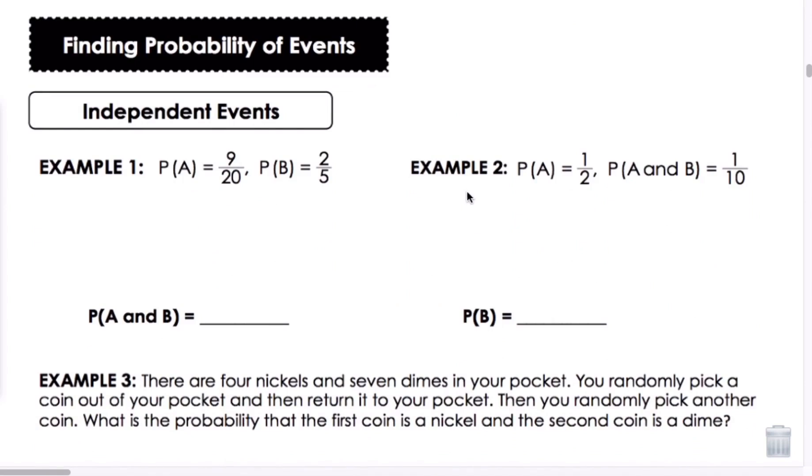Let's look at finding probability of events. And let's start with first the independent events. Example 1. P of A is 9 over 20, and P of B is 2 fifths. So this is probability of A, probability of B. We want to know P of A and B. So we're going to put it into our formula. And we know it's P of A times P of B. So we'll have 9 twentieths times 2 fifths. And we can kind of simplify here. We know this will be 10, this will be 1. And we end up with the P of A and B is 9 over 50.